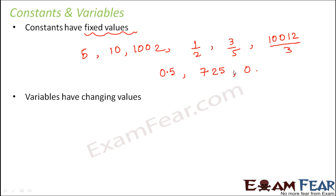Whereas when we talk about variables, these are those quantities which have changing values. And mostly, we represent variables with alphabets like x, y, l, z, a, b, p, q, etc. So you can make use of any alphabet to represent a variable. And these alphabets have different values at different situations.